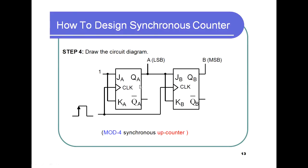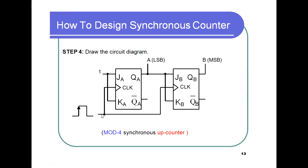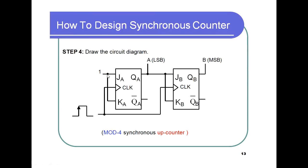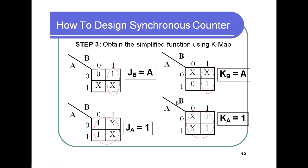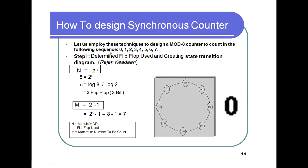This tells us how to wire the circuit: JA and KA are both connected to logic 1 (high). JB and KB are both connected directly to output A (Q0). This is how our mod-4 synchronous up counter is constructed.